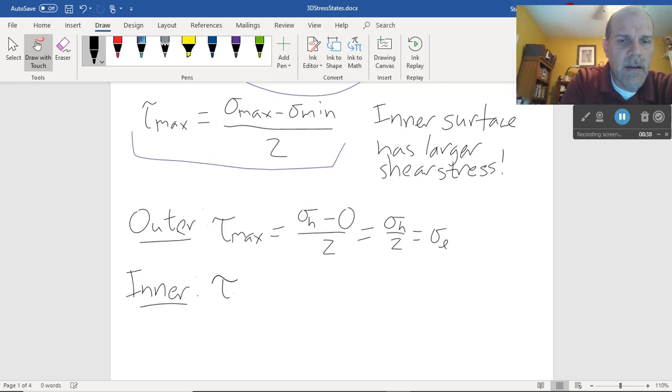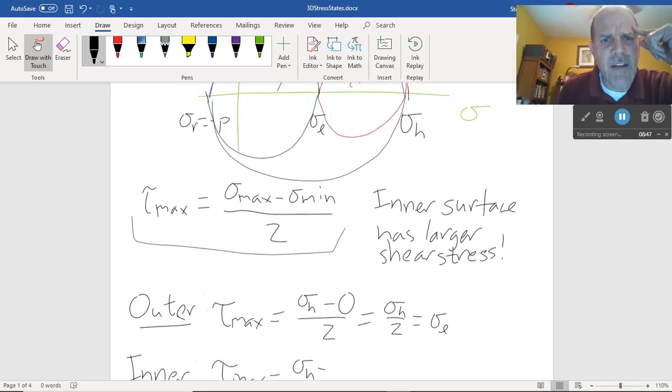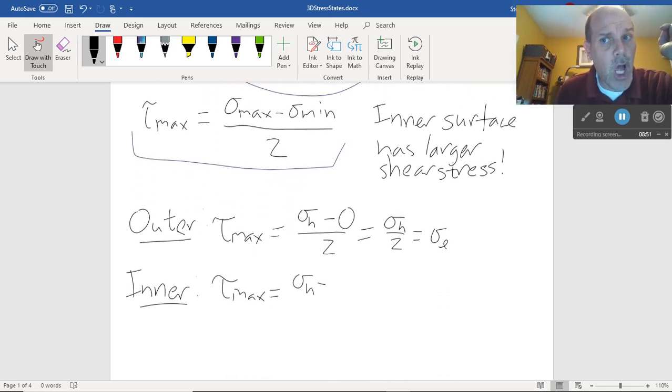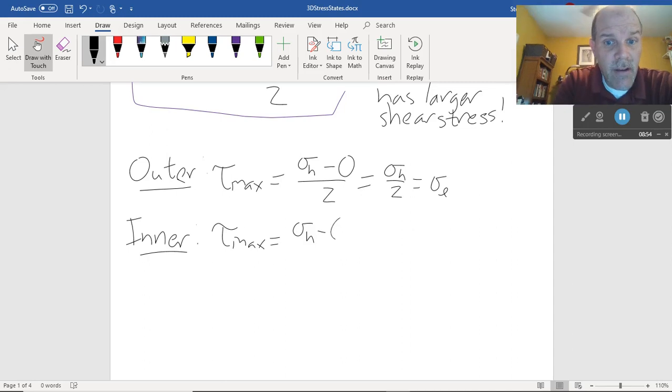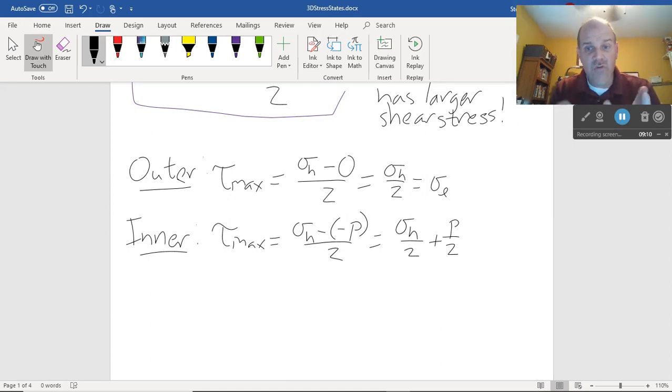What about the inside? Tau max equals sigma max, that's the hoop stress, minus the smallest principal stress. That's sigma r, which is minus p. I'm subtracting a negative. Minus a negative p over two equals sigma h over two plus p over two. The inner surface has the larger shear stress for that reason. It's got the extra compressive principal stress in the third direction, which forces us to have a larger shear stress because the Mohr circle radius got bigger.